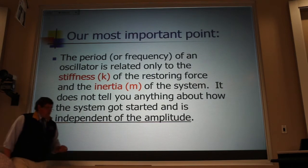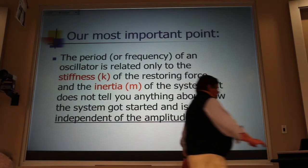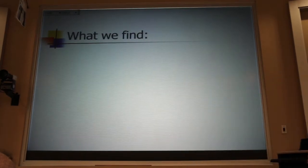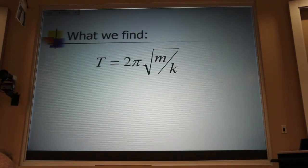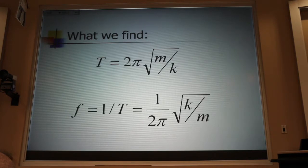What we found was that the period of the oscillation depended on the mass and the spring constant in this relationship here. And we could put it upside down, and that became the frequency, because frequency was one over the period. And those formulas will be on the front page of the exam.